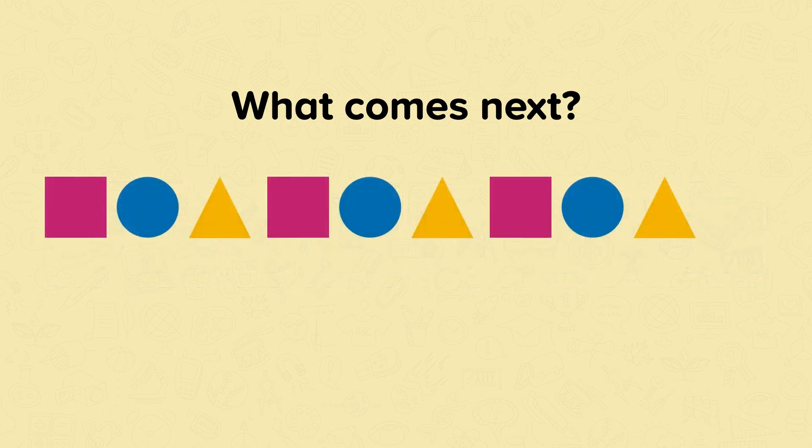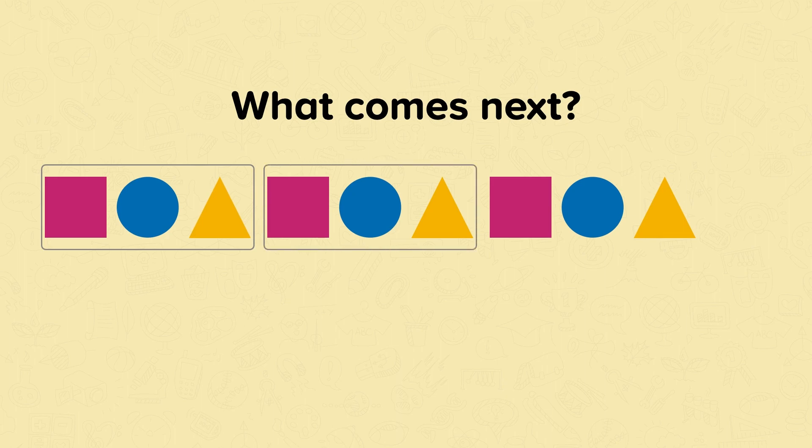Now let's have a look at another repeating pattern. Here we have three shapes that make the repeating pattern. We have a square, circle and triangle, then again, then again. Square, circle, triangle, and again, square, circle, triangle.